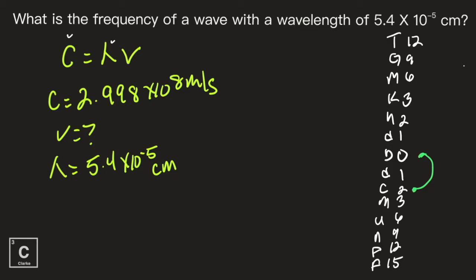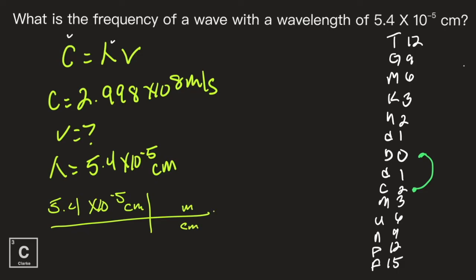Write my given, make my cross, bring my given unit down, put what I'm going to on top. Meters is the biggest — it gets the one. Centi is a 2, and remember that's an exponent: 1 times 10 to the 2. I put that in my calculator using my exponent key. So I'm typing in 5.4 and pushing the second button using that exponent key.